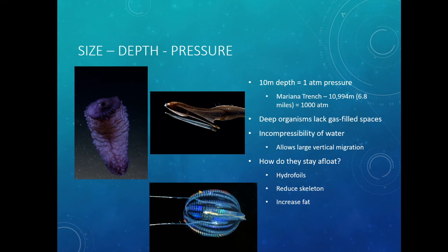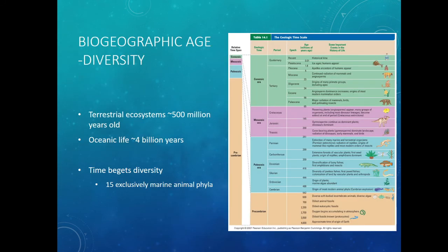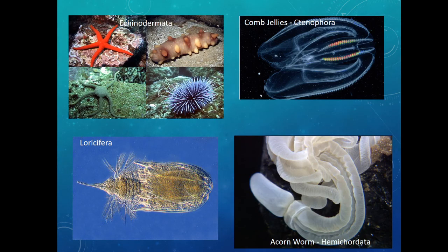Now let's think about age. The age of the ocean is kind of unimaginable. Terrestrial ecosystems have only had life coming onto them for about half a billion years, 500 million years. But oceanic life has existed for over 4 billion years. Time begets diversity — the longer organisms are in a certain place, the more diversity you will have. What we see is that there are 15 exclusively marine animal phyla — things like echinoderms, comb jellies, loriciferans, and acorn worms — just a handful of phyla that we only find in salt water.